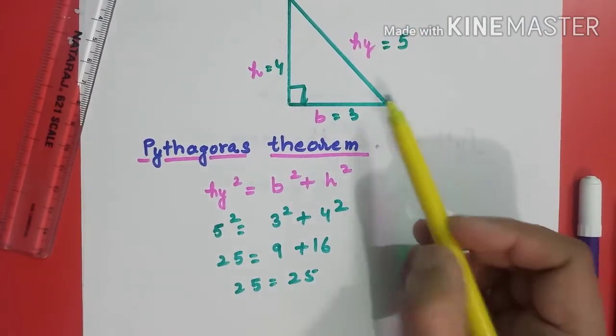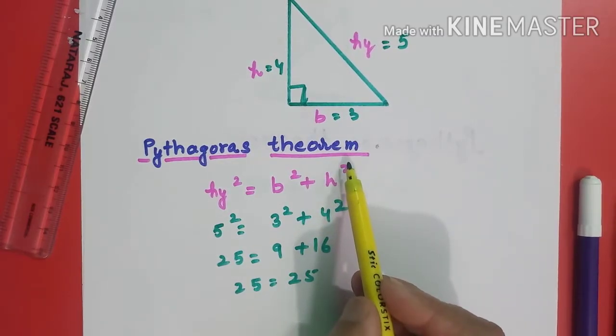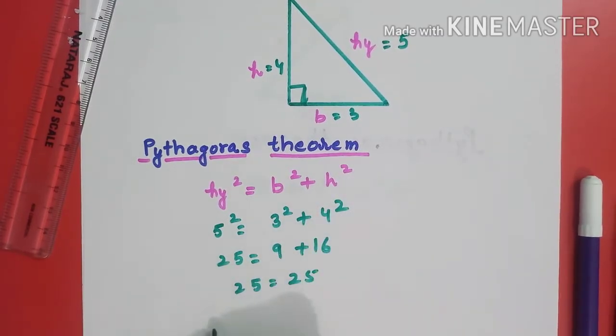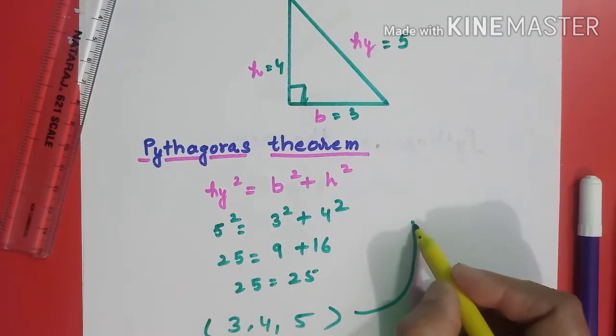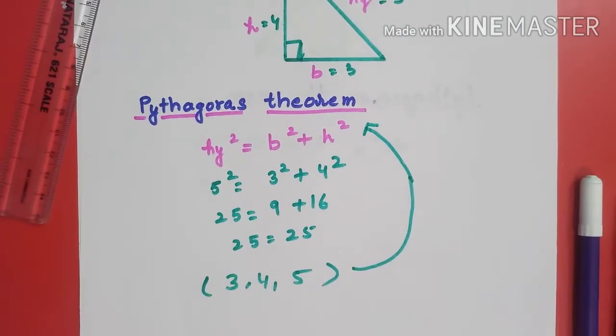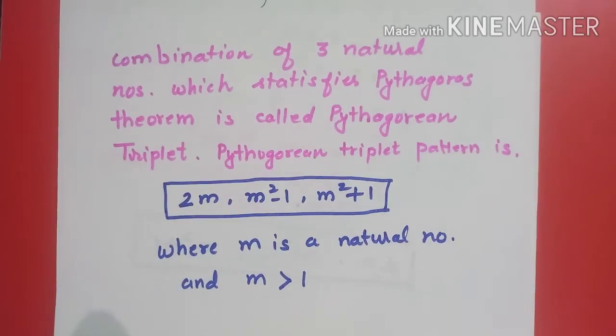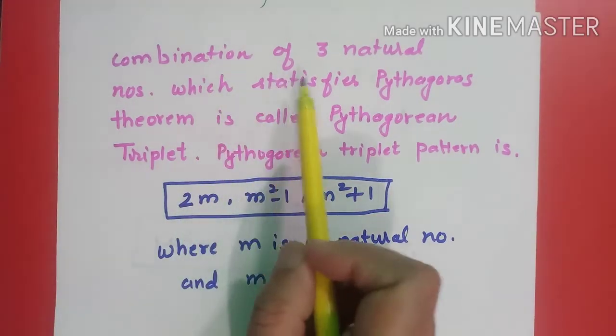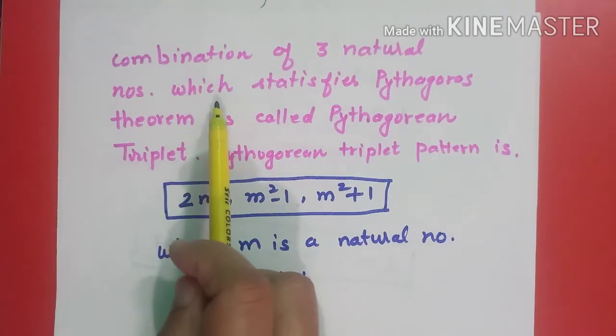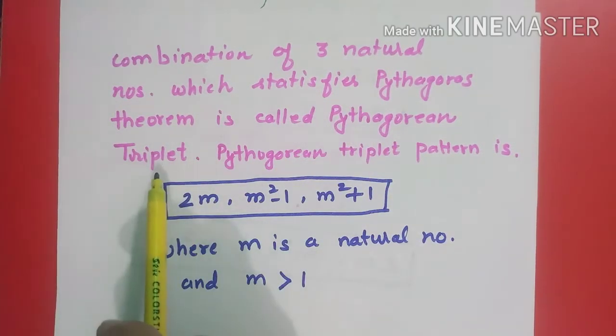Okay students, here these three dimensions 3, 4, 5 satisfy this theorem. So any three natural numbers which satisfy the Pythagoras theorem are known as the Pythagorean triplet.